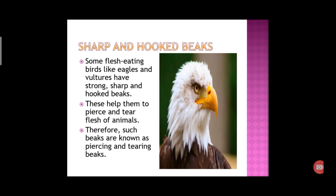Sharp and hooked beaks. The shape of this beak is known as a hooked beak. This type of beak is present in flesh-eating birds to pierce and tear the flesh, and is known as a piercing and tearing beak. For example, eagle and vulture have such kind of beaks.